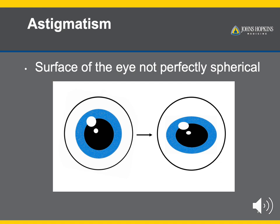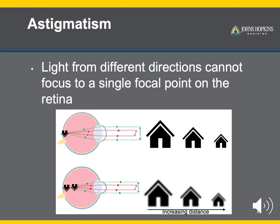Astigmatism is when the surface of the eye called the cornea is not perfectly spherical. Instead of being shaped like a basketball, it is more like a football. However, unlike the exaggeration shown in this picture, the changes are usually subtle and not visible to the naked eye. The problem with having a non-spherical cornea is that the lens is not the same in all directions. Therefore, light coming from different directions cannot focus at the same point, leading to multiple images of the same object at different places along the visual axis, making it blurry from the viewpoint of the retina. This can happen whether the object is near or far, and astigmatism may also occur in combination with myopia or hyperopia.